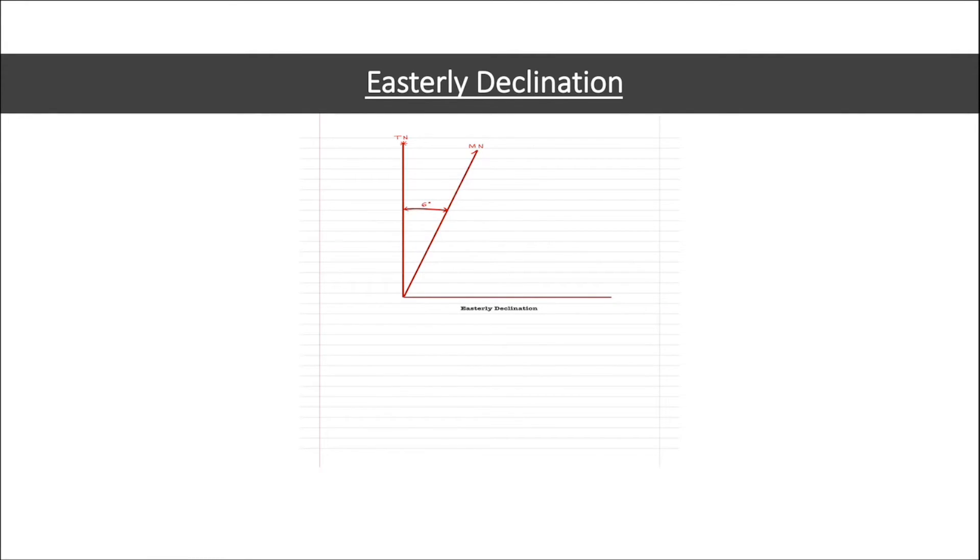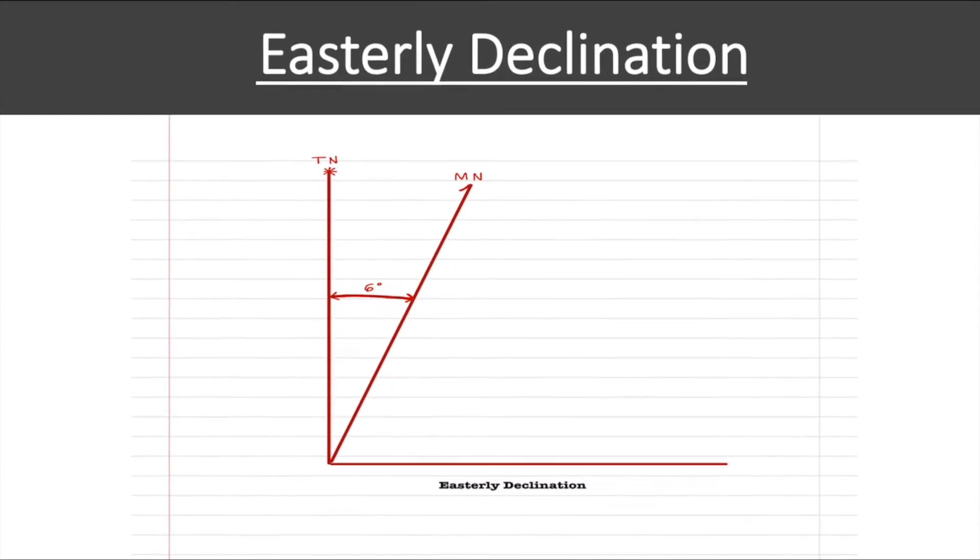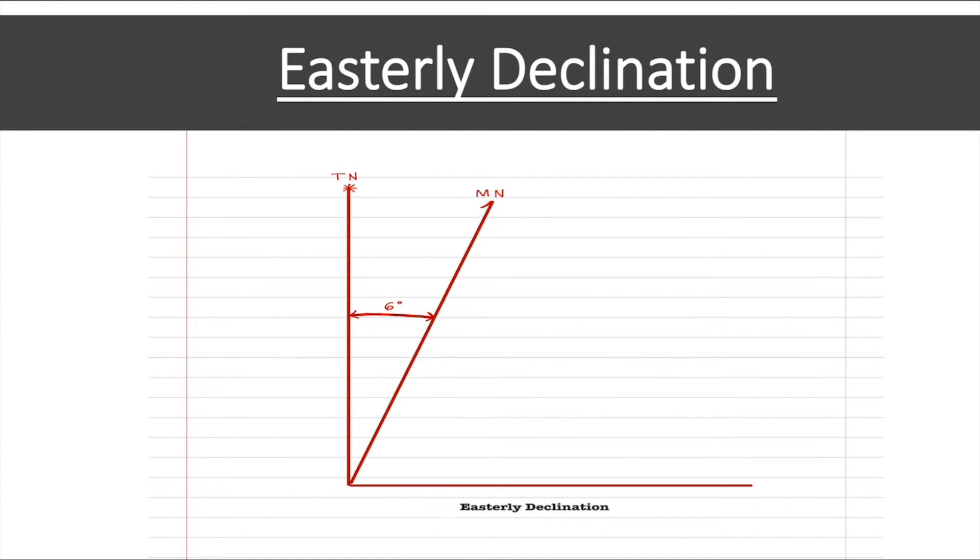When you're looking at magnetic declination you have to determine whether you have an easterly declination or a westerly declination and you can find that again in the legend of the topo map.